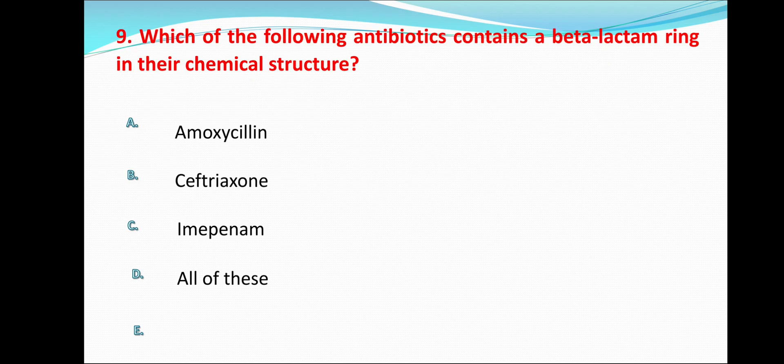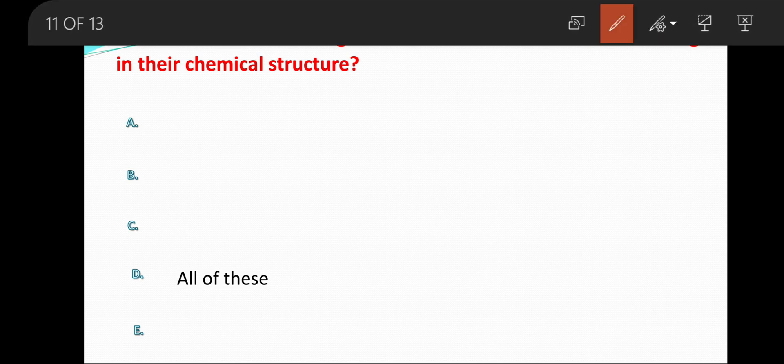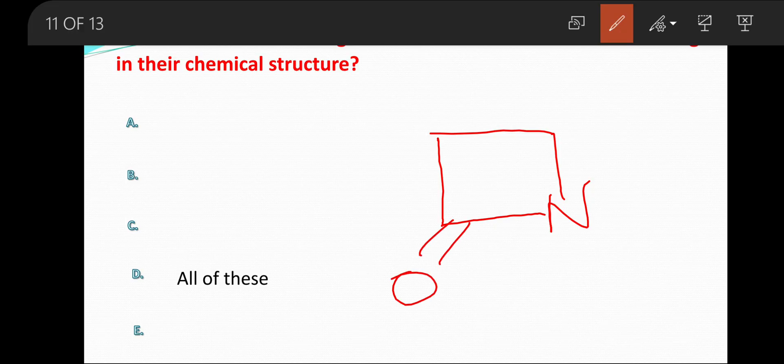Moving on to question number 9: which of the following antibiotics contains a beta-lactam ring in its chemical structure? Options are amoxicillin, ceftriaxone, imipenem, or all of these. Amoxicillin belongs to the penicillin class and contains a beta-lactam ring. Ceftriaxone belongs to the cephalosporin antibiotics, which also contains a beta-lactam ring. Imipenem also contains a beta-lactam ring. So option D — all of these — is the correct answer. The structure of the beta-lactam ring is shown here.